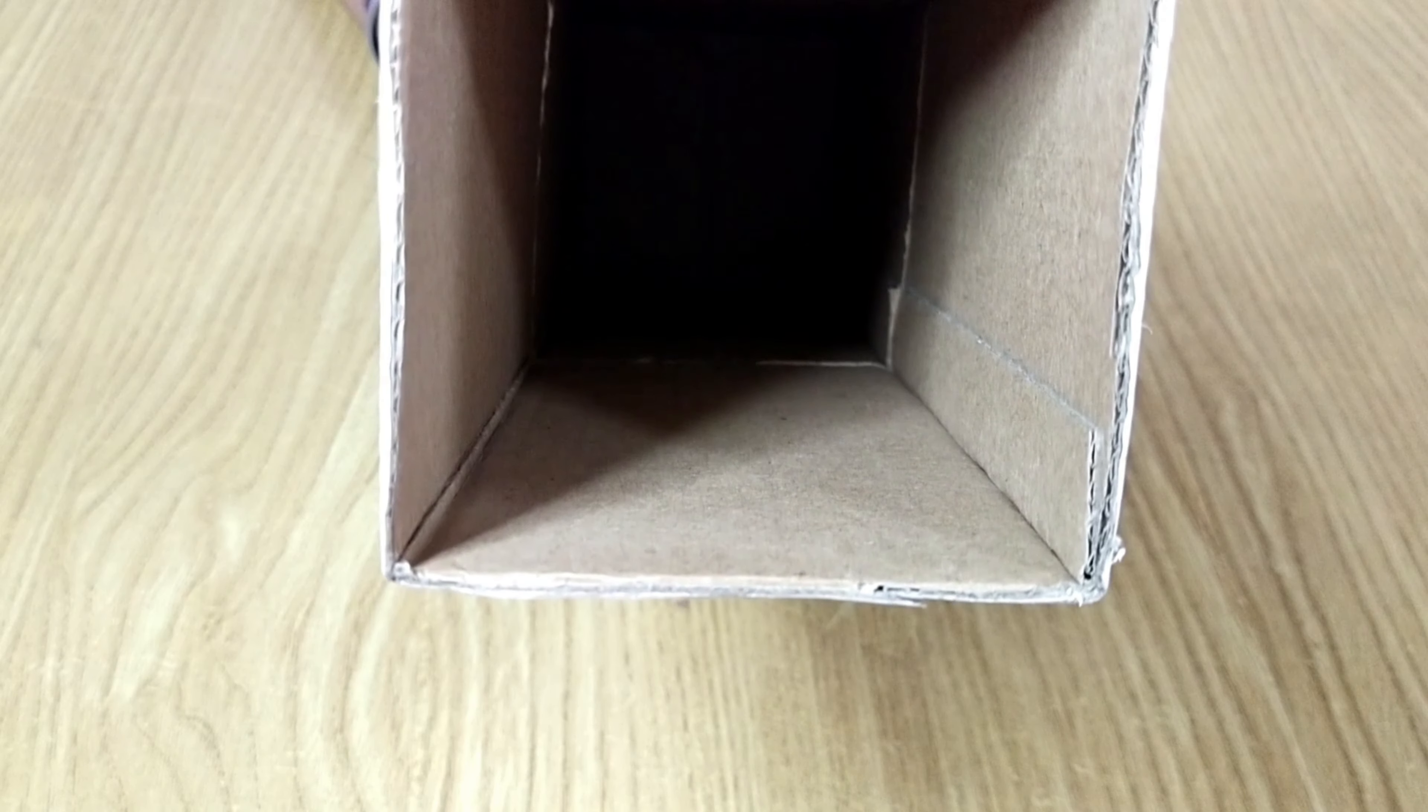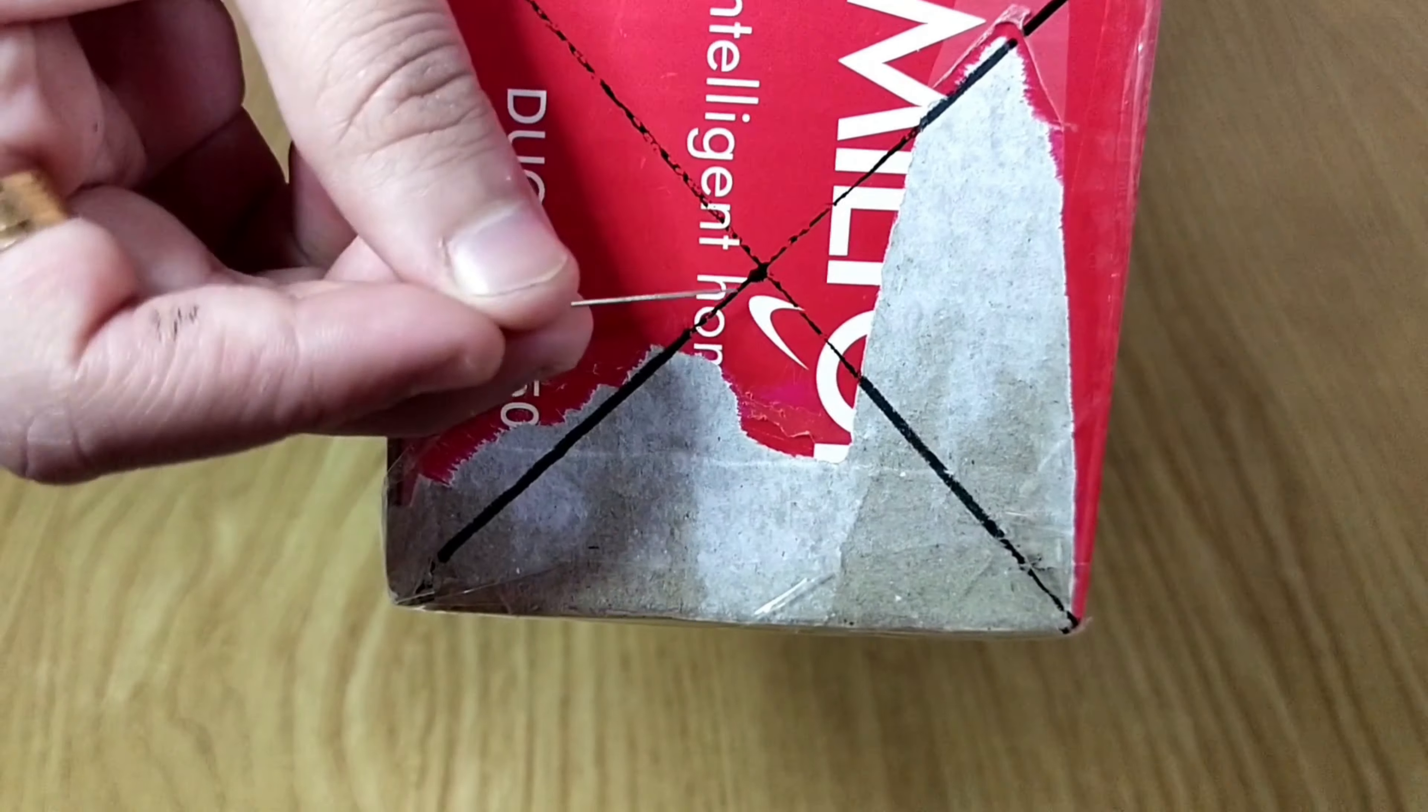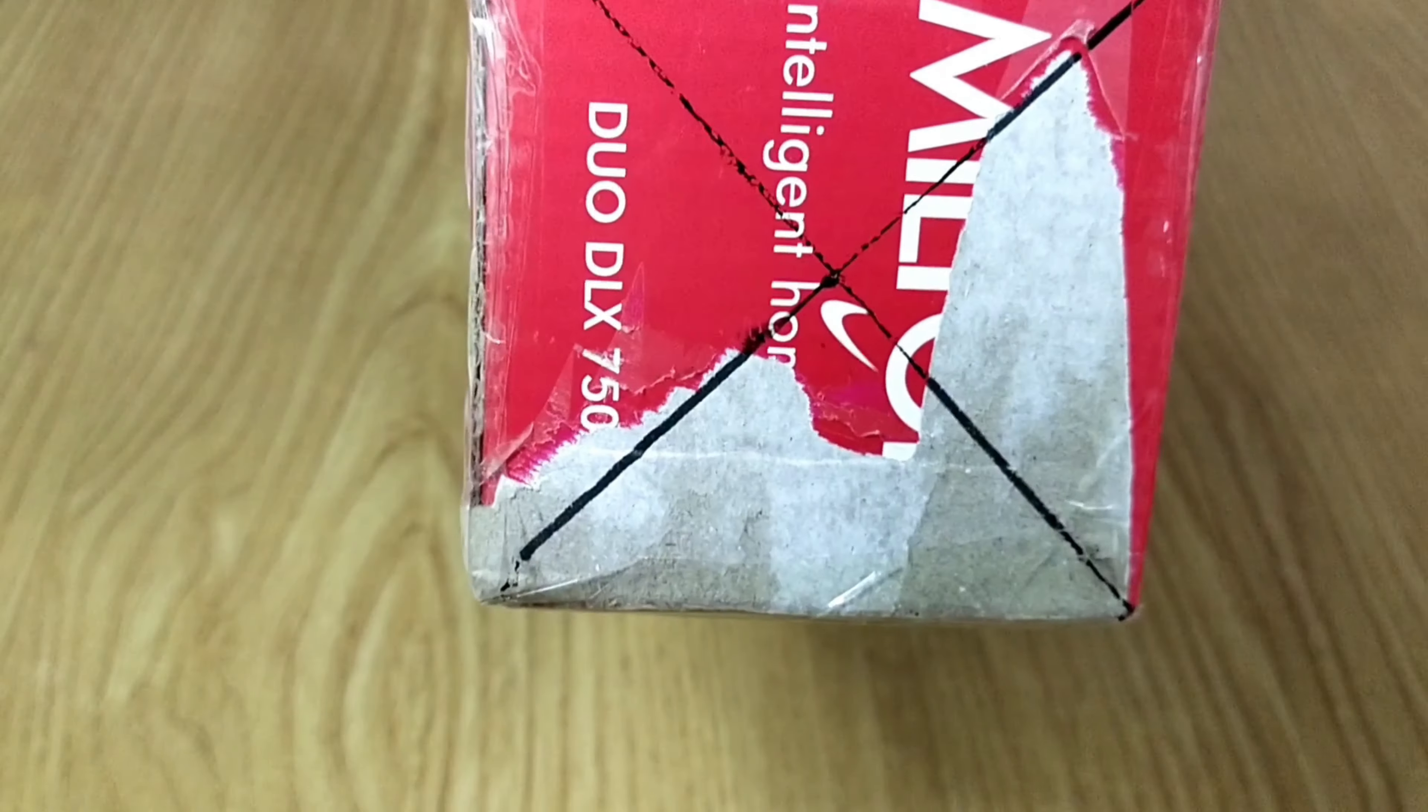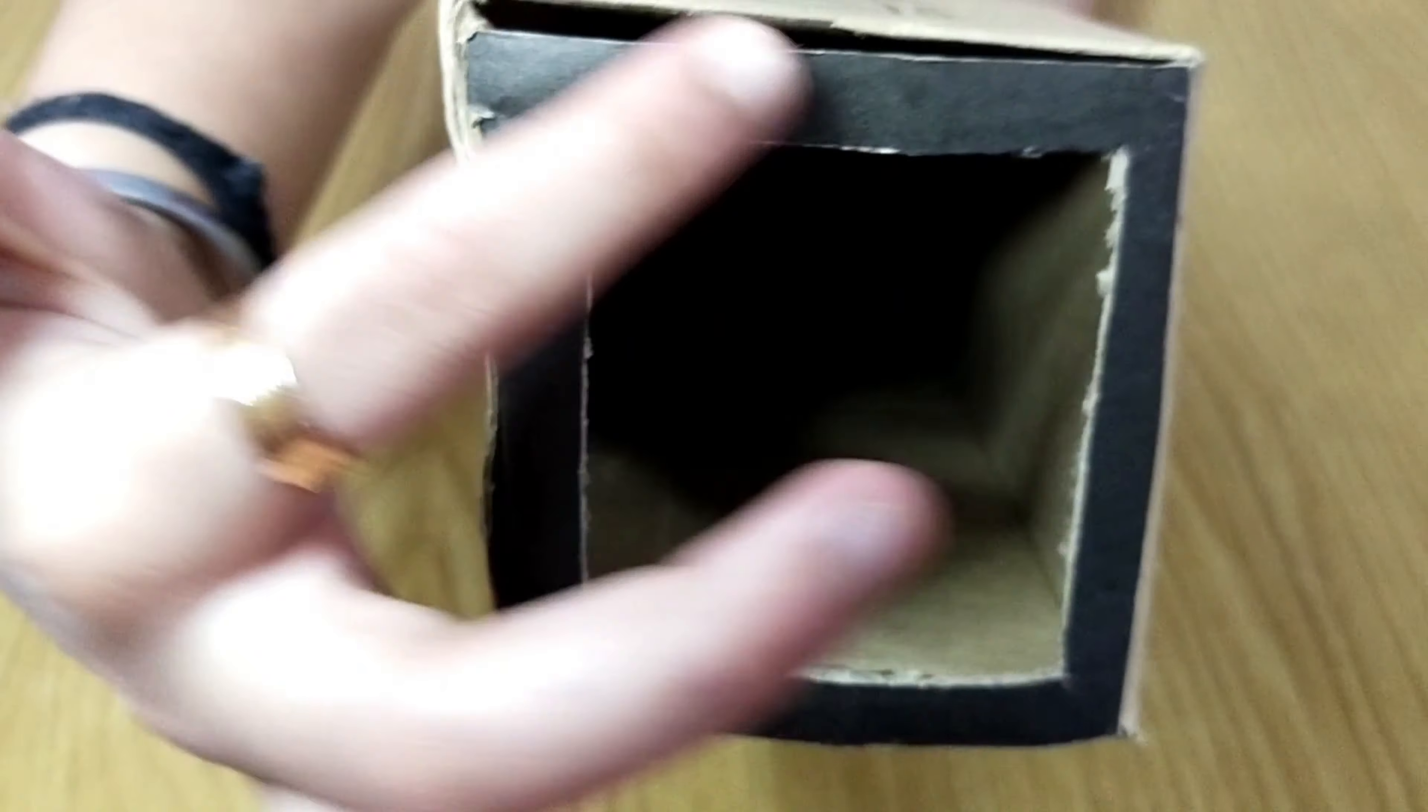On the opposite side mark the center and make a small hole using a pin. The hole should be very small to get a clear image. Now take the smaller box and cut out a square from the middle.